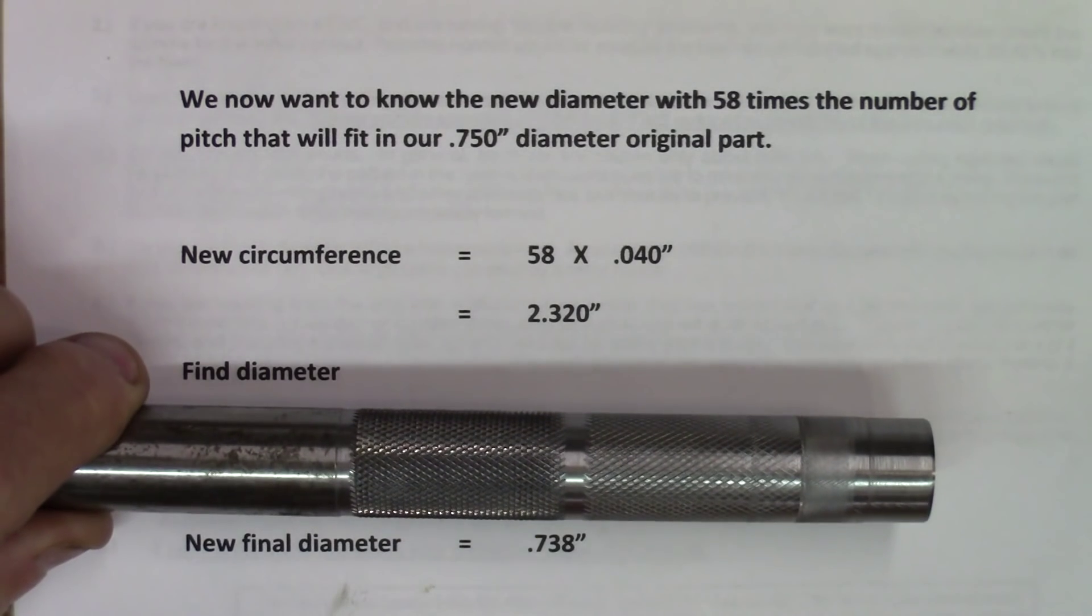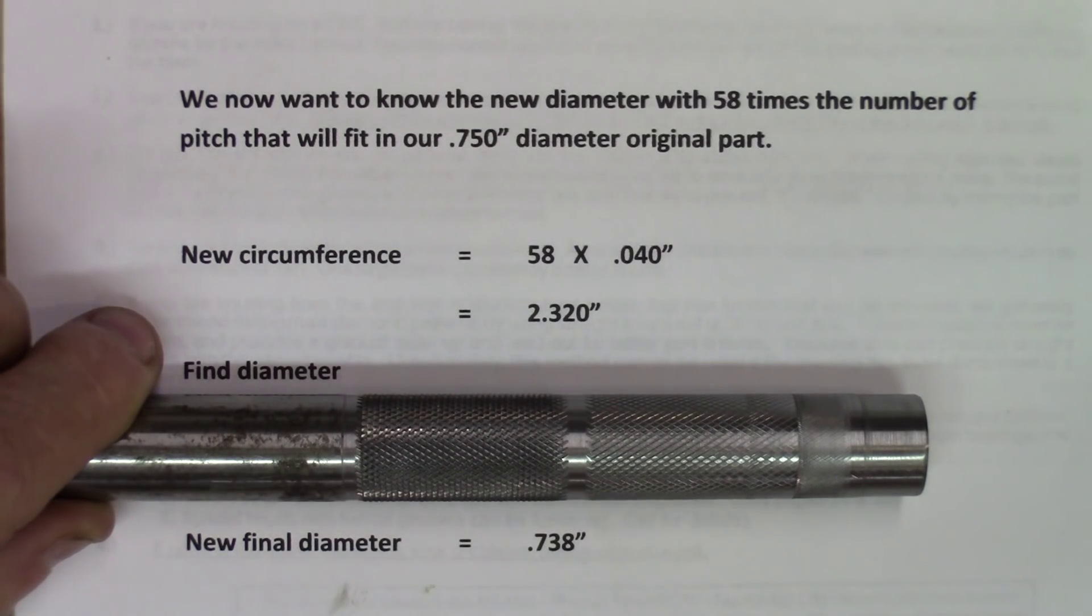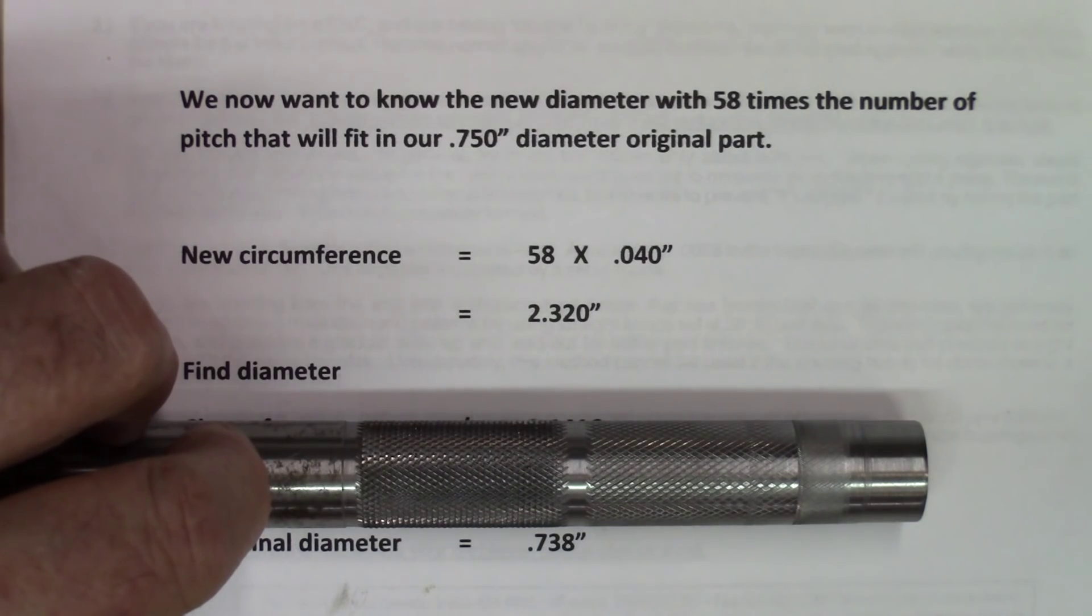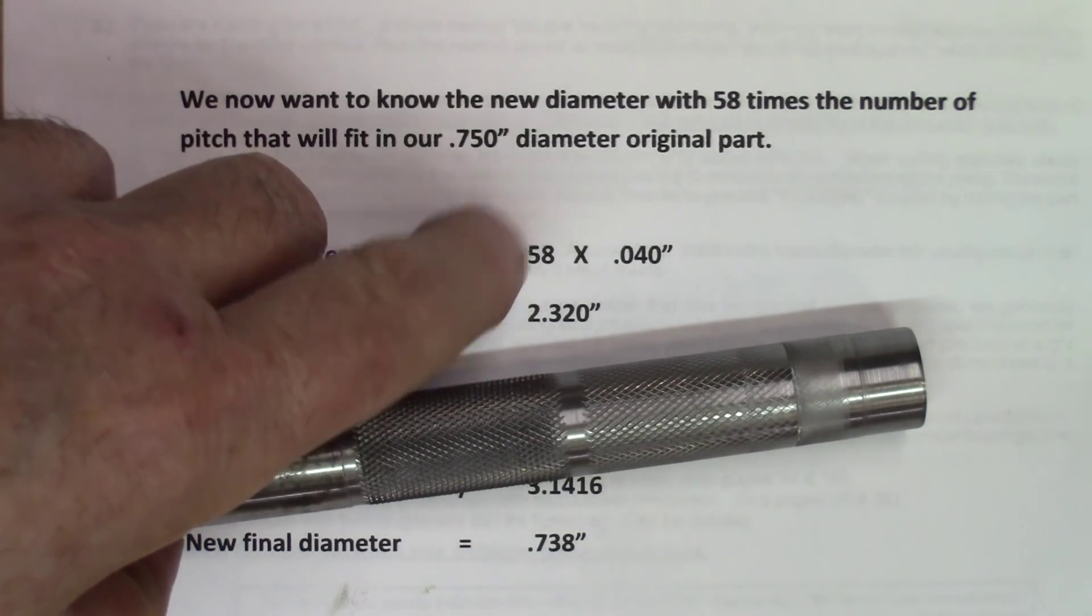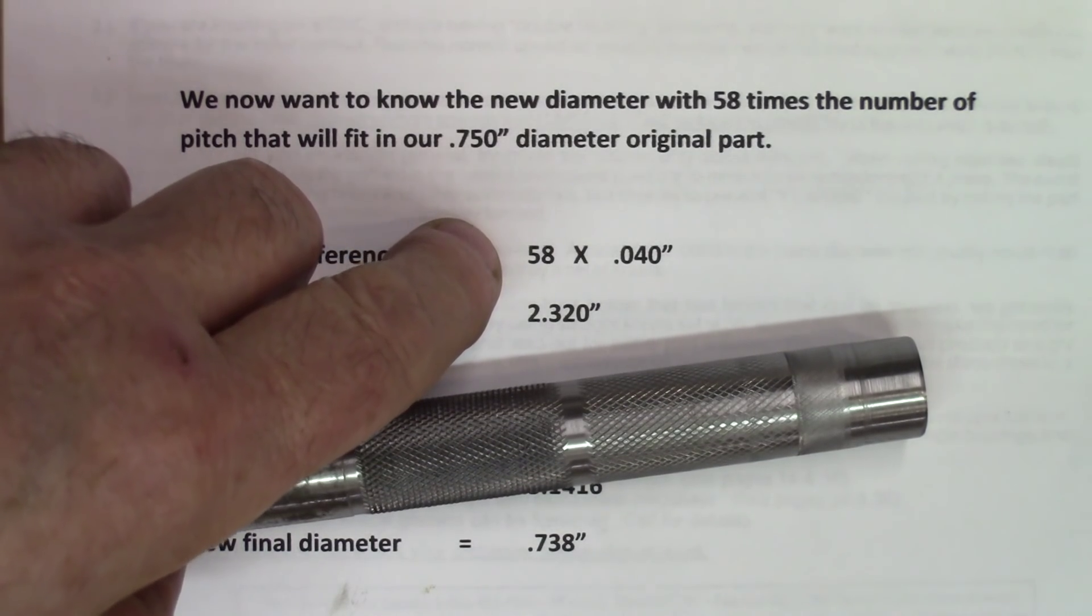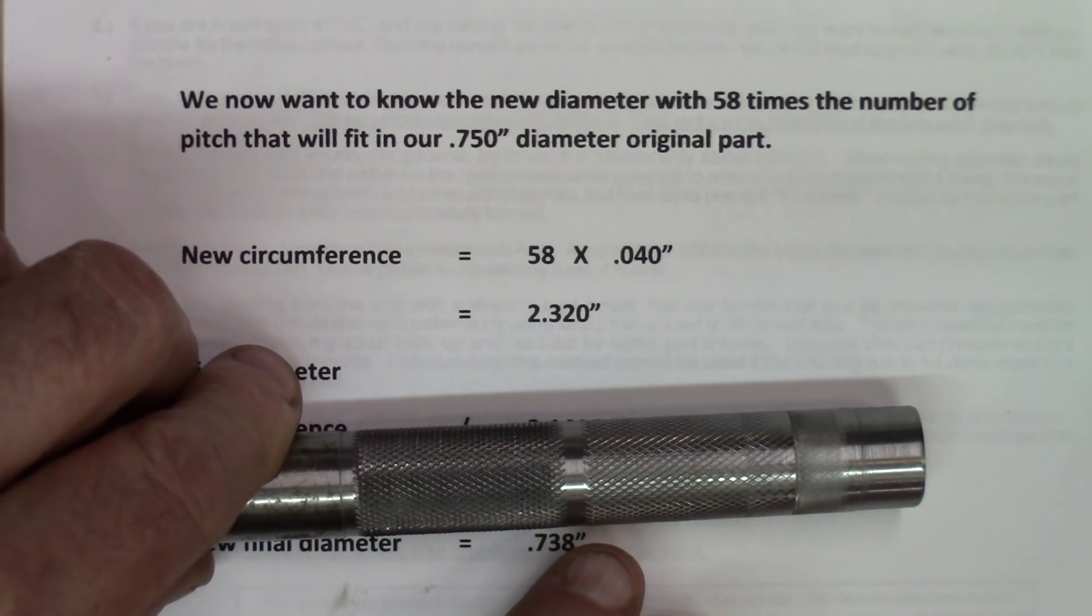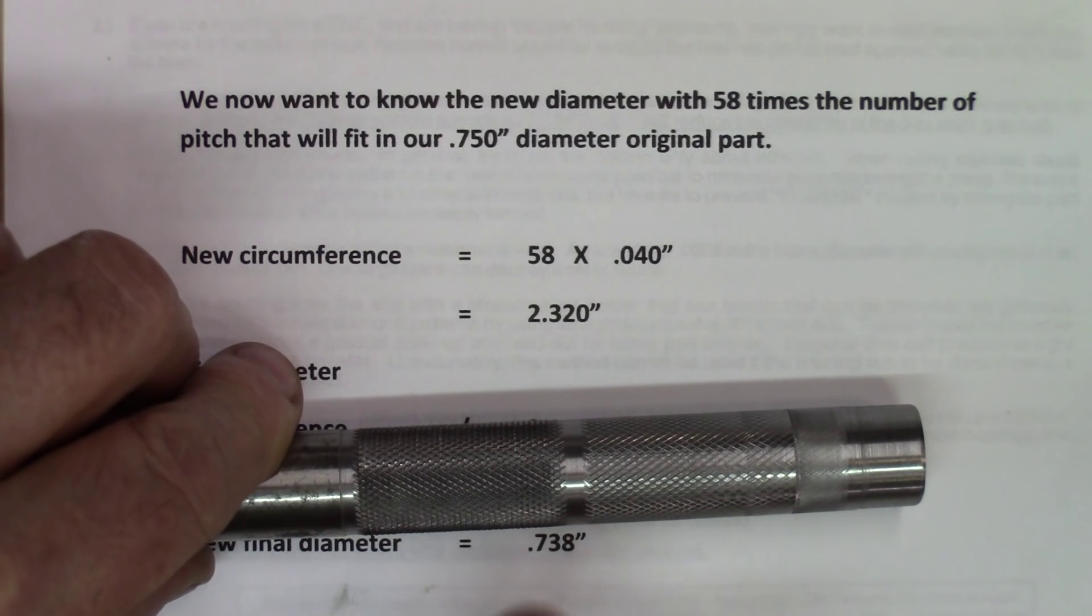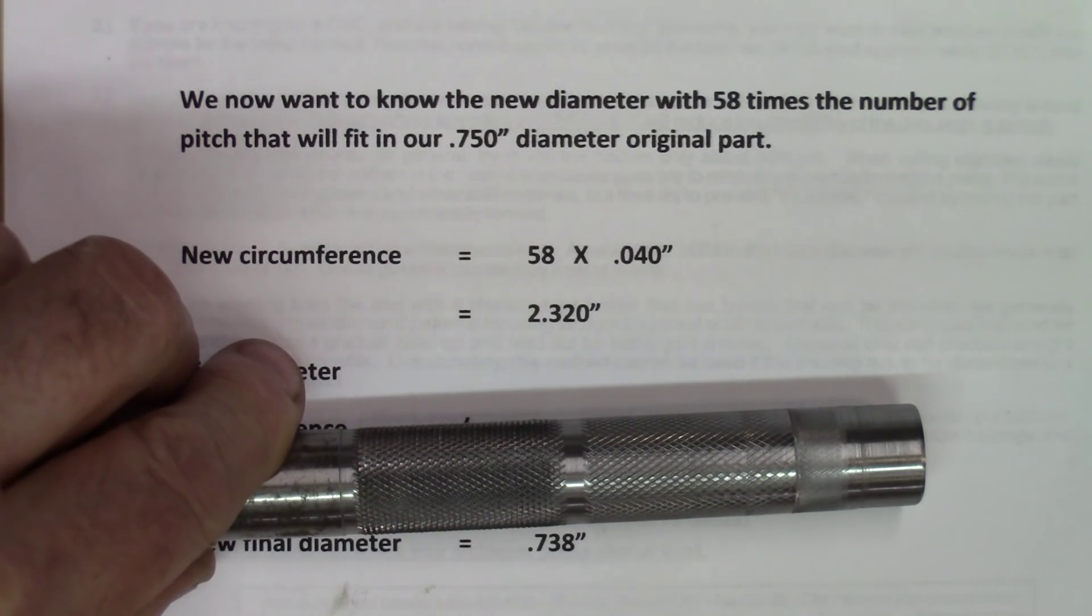And this 738 thousandths will be the diameter we use right there, just before we start knurling. This is 750. We can't add anything, and we have to get something with an even number without the fraction. So, the biggest next diameter under 750 will be 738. This is where we start and we get the knurls.